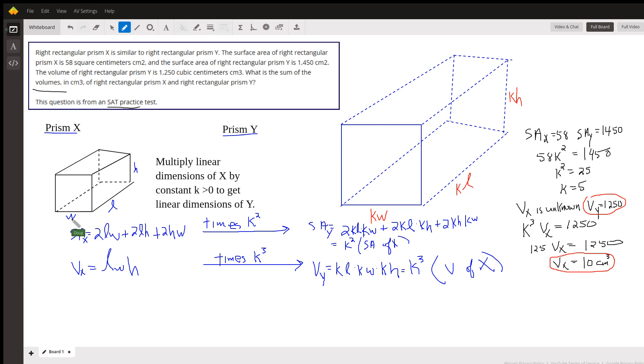I didn't draw the prisms too well, but you get the idea. Here's prism X. It has dimensions LWH. And if prism Y is similar to prism X, that means there's a constant multiplier that we can multiply times each linear dimension to get the dimensions of the new prism, which could be larger or smaller. But K has to be greater than zero. So the new dimensions for prism Y are KW, KL, KH.